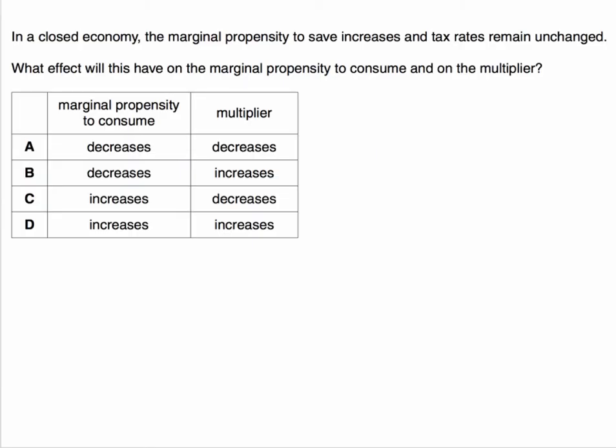We're told we have a closed economy. That means we can ignore exports and imports, and the marginal propensity to save increases whilst tax rates remain unchanged. Our question is: what effect will this have on the marginal propensity to consume and on the value of the multiplier?